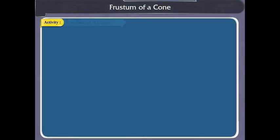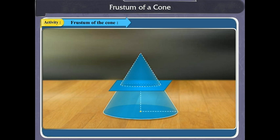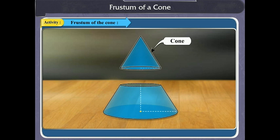Now let's see what is a frustum. If the cone is cut off by a plane parallel to the base, two parts are formed. The part formed towards the vertex is a cone, and the other part which looks like a glass used for drinking water is called the frustum.